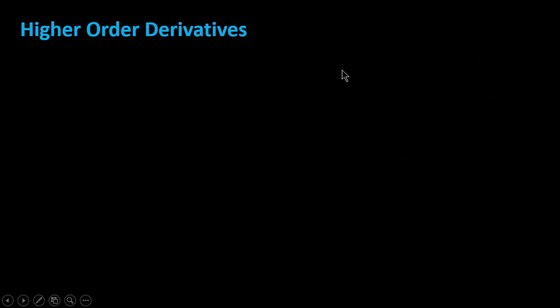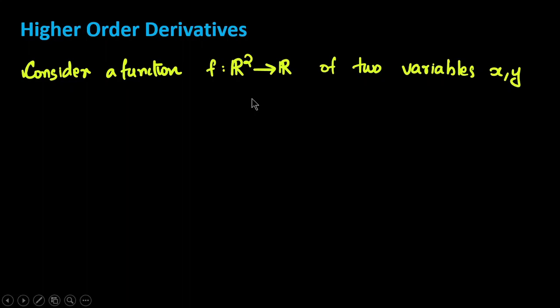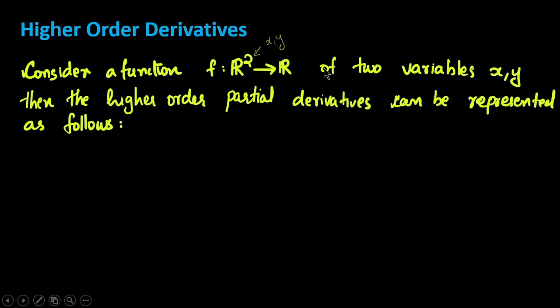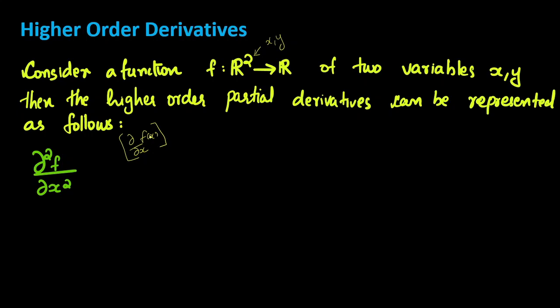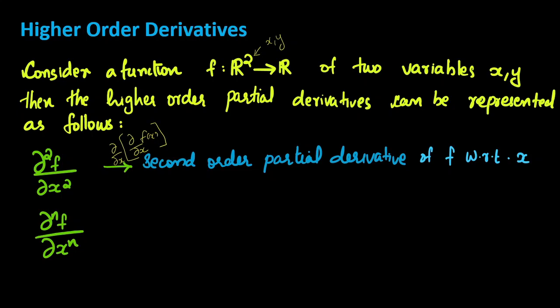Consider a function f mapping R² to R, with two variables X and Y — a two-dimensional space. The higher order partial derivatives can be represented as follows. The first is ∂²f/∂x², meaning we take the derivative of f with respect to x, then take the derivative of that result again with respect to x. That gives us the second order partial derivative of f with respect to x.